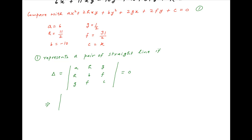Substituting the values of a, b, c, f, g, and h obtained above, we get a determinant with rows (6, 11/2, 1/2), (11/2, −10, 31/2), and (1/2, 31/2, k) equal to 0.